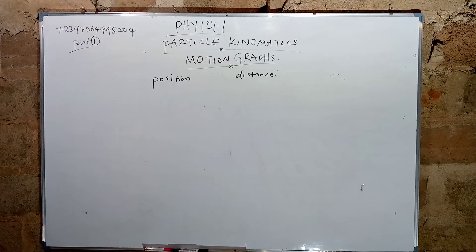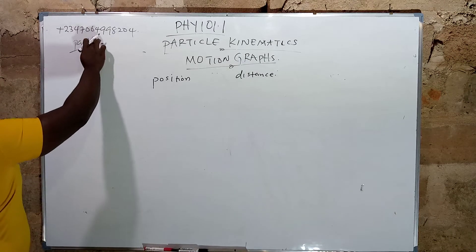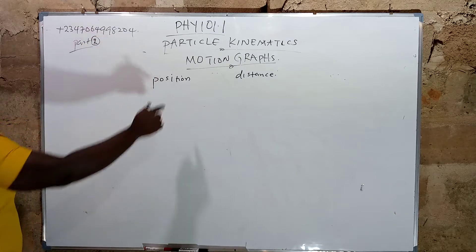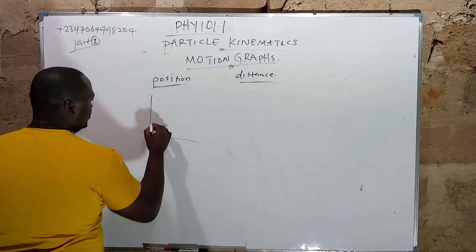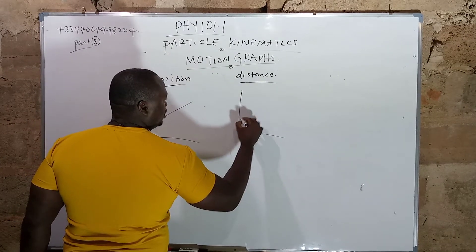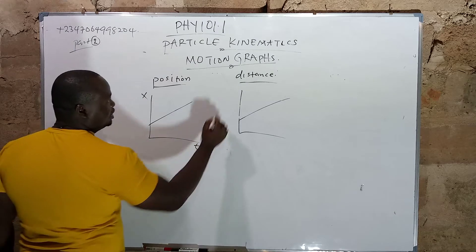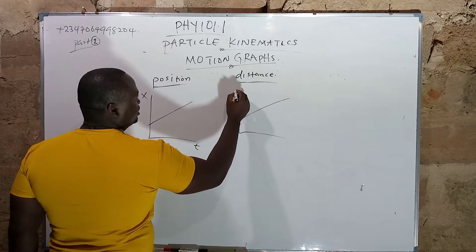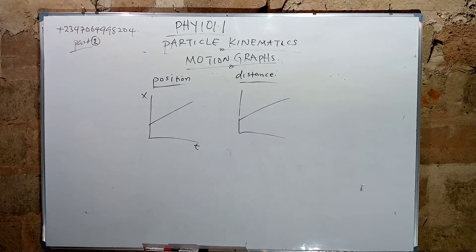In part 2 of this video, we'll be talking about the difference between the position-time graph and the distance-time graph. We have our normal graph — this is our normal graph. This is S all over T. And then this is a distance-time graph, which should be D all over T.